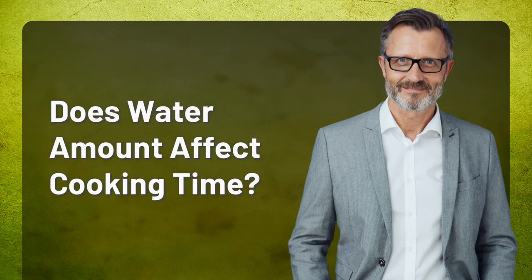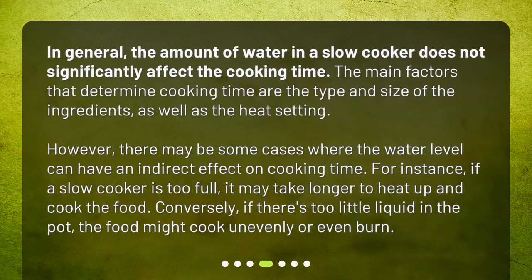Does water amount affect cooking time? In general, the amount of water in a slow cooker does not significantly affect the cooking time. The main factors that determine cooking time are the type and size of the ingredients, as well as the heat setting. However, there may be some cases where the water level can have an indirect effect on cooking time.